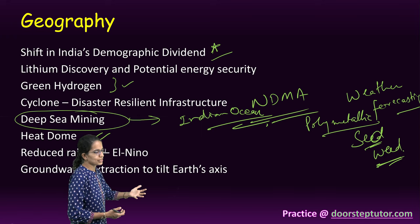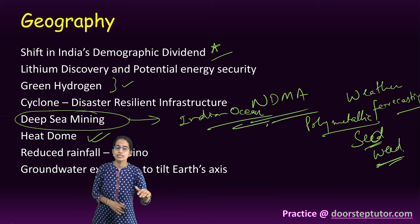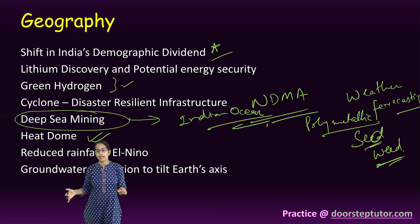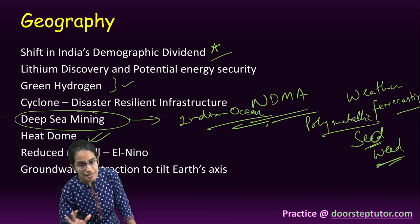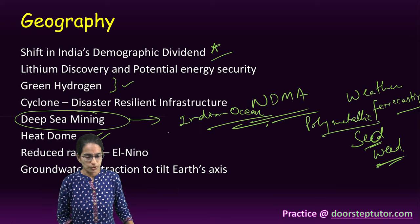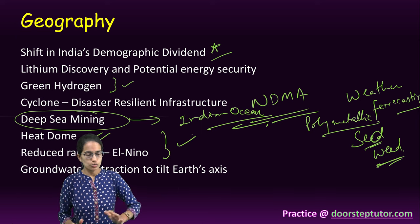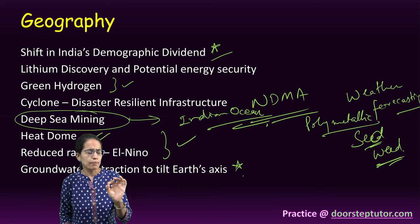The weather changes and reduced rainfall because of El Niño, La Niña, and ENSO — the Southern Oscillation — and its impact, along with the Indian Ocean Dipole, are some of the other important topics. These have been covered in detail in the video lectures.